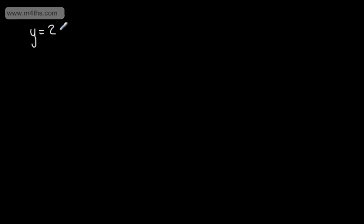In this video, we're going to do a quick worked example of finding the equations of lines parallel and perpendicular to a given line through a given point. Let's say we have the line y is equal to 2x plus 1, and we want to find the equations of lines parallel and perpendicular to this line, passing through the point (4, 3).